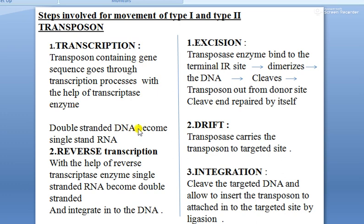By the transcription process, double-stranded DNA becomes single-stranded RNA. The next step is reverse transcription: with the help of reverse transcriptase enzyme, single-stranded RNA becomes double-stranded DNA. That DNA part is then inserted into the recipient DNA portion. By this way, the recipient DNA can carry the characteristics of the donor cell DNA, which may include antibiotic resistance genes or other special sequences.